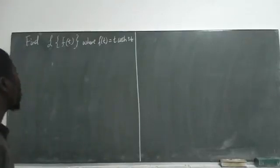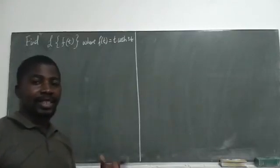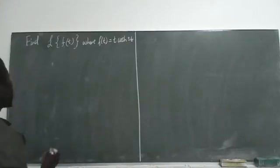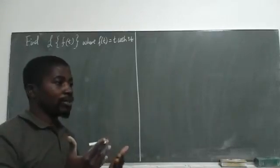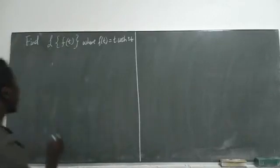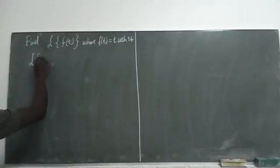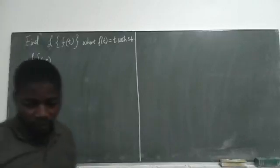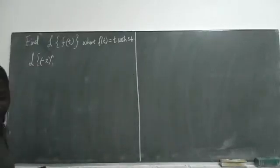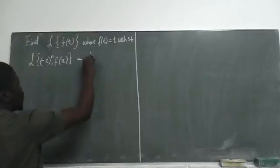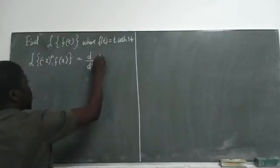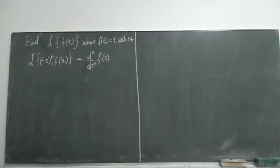The procedure is pretty simple because you are guided by that table of Laplace transforms. If you look in the table, you are given that the Laplace transform of (-t)^n multiplied by f(x) is equal to d^n/ds^n of the Laplace transform. This is the formula that we're going to use to answer this question.